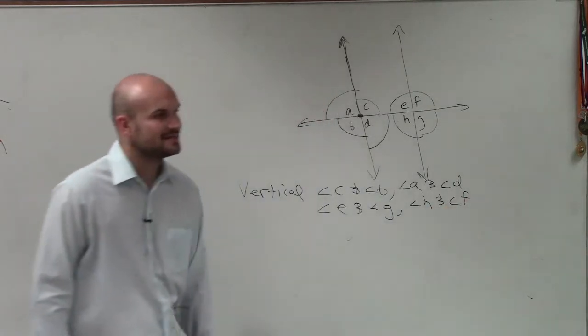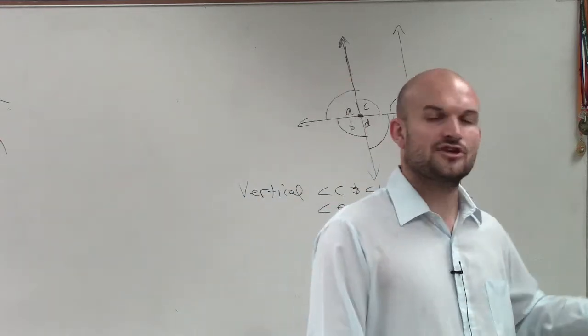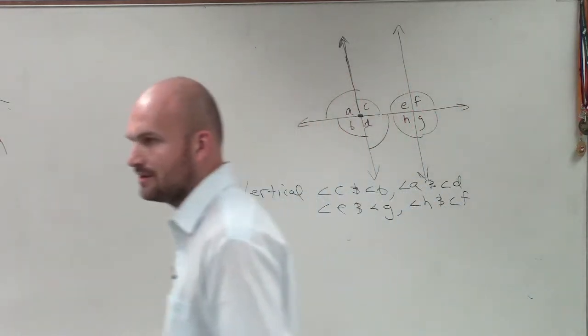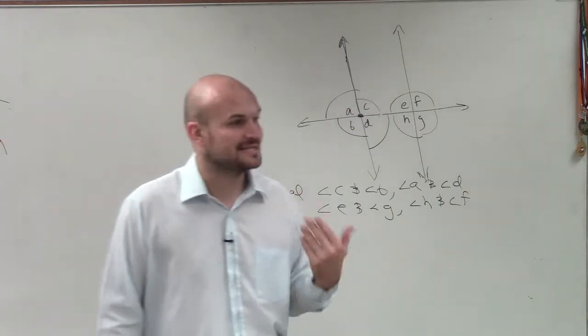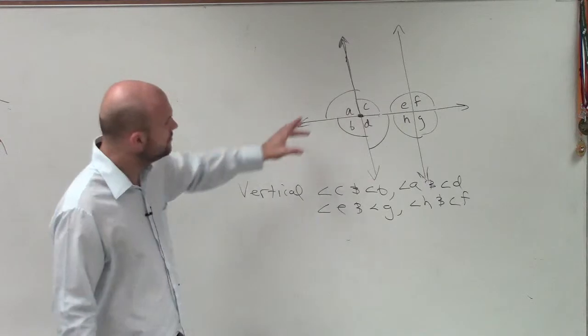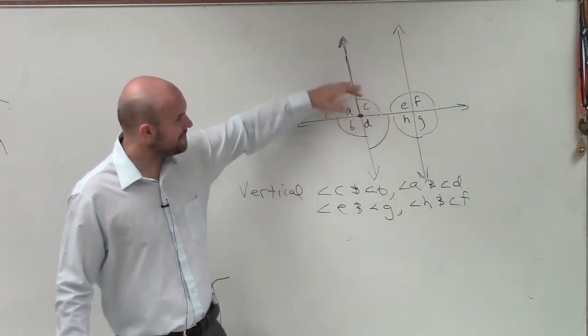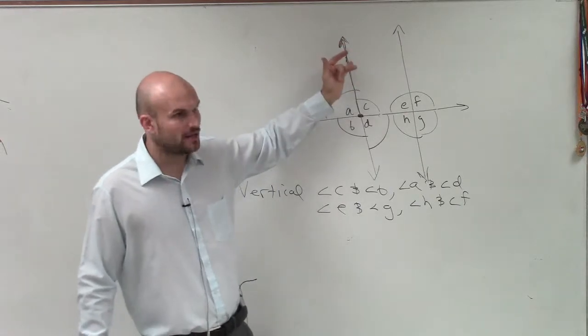Now on your test, I gave you guys an example of, if these two angles are vertical, does that prove they're parallel? And a lot of you said yes. But vertical angles do not prove that lines are parallel. Just because these two angles are equal to each other, that does not mean that these two lines are parallel to each other.